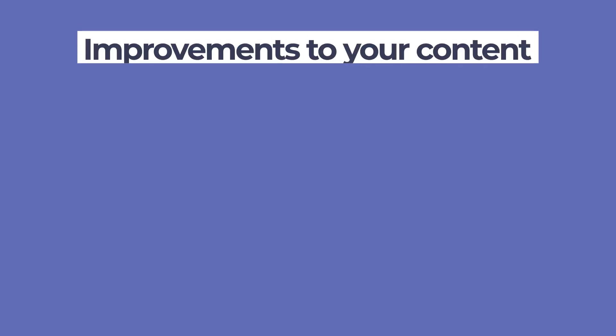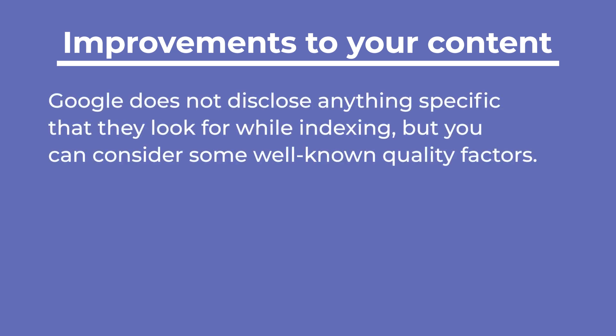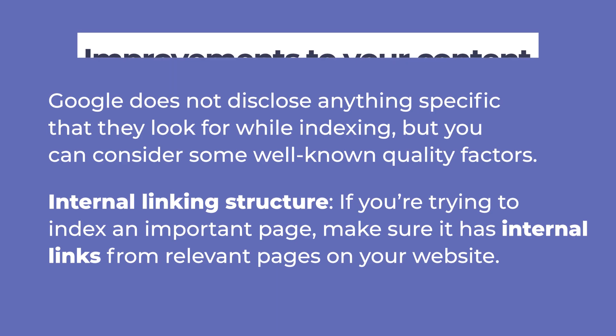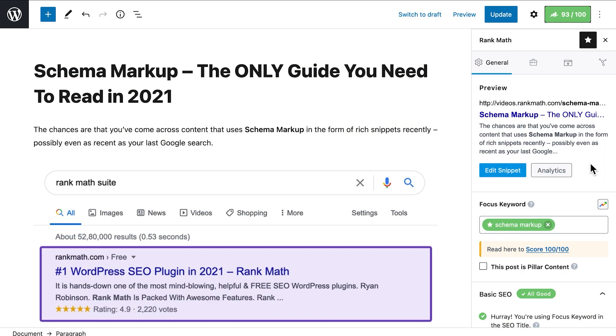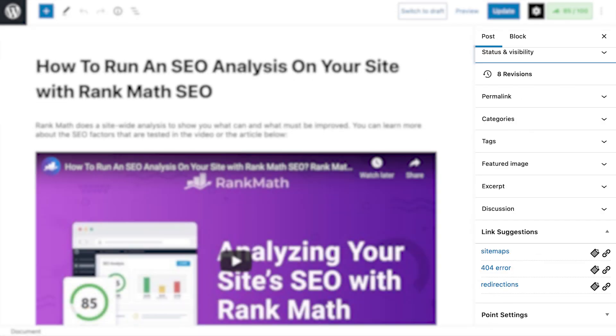Now that we've covered the practical steps that allow your site to be indexed, let's see what you can do to increase the chances of that happening. Google does not disclose anything specific that they look for while indexing, but you can consider some well-known quality factors. One of them is the internal linking structure. If you're trying to index an important page, make sure it has internal links from relevant pages on your website. To start building internal links, you can set your important pages as pillar content and let RankMath suggest relevant internal links.